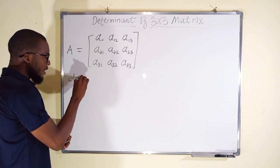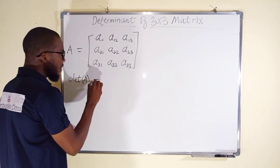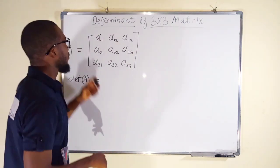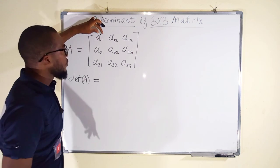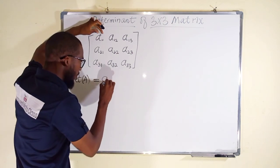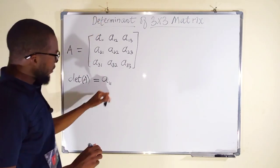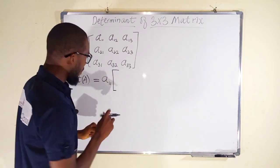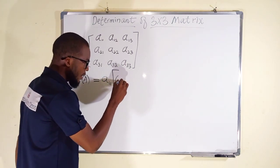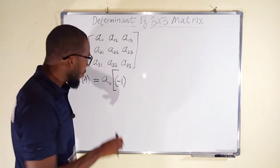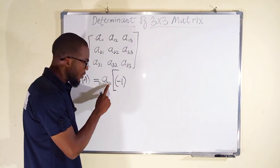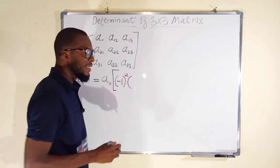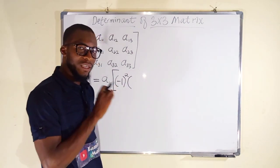The determinant of this matrix A will be equal to — we are going to use the first row elements, one after the other. We start with A11, which is the first row, first column element. This element is going to be multiplied by its cofactor. The cofactor is obtained by taking negative 1 raised to the power of 1 plus 1, which equals 2. You also multiply by the determinant after striking out the row and column that correspond to that element.